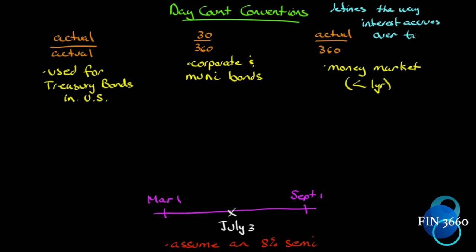For US Treasury bonds it's the actual number of days since the last coupon payment divided by the actual number of days in the payment period. For corporate and municipal bonds it's shortened to every month has 30 days and the year has 360 days. For money market funds it's the actual number of days since the last payment but with an assumed 360-day year.